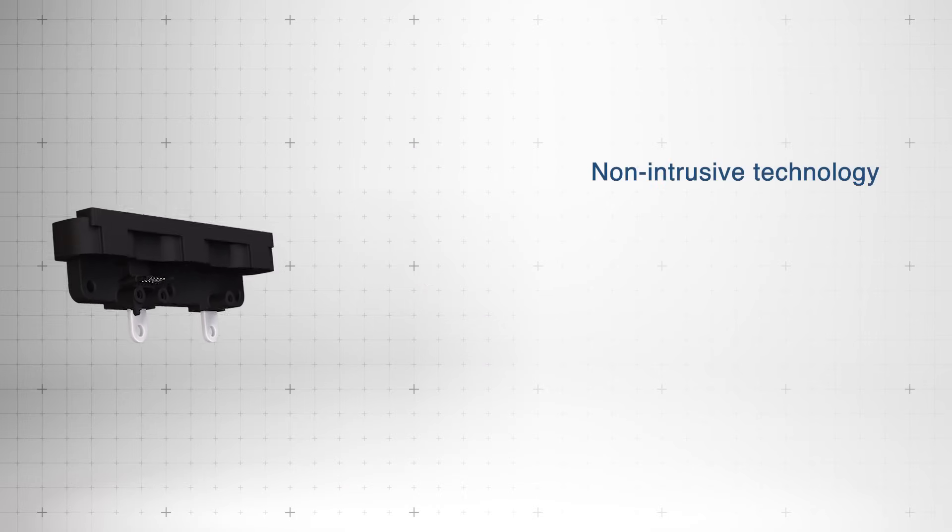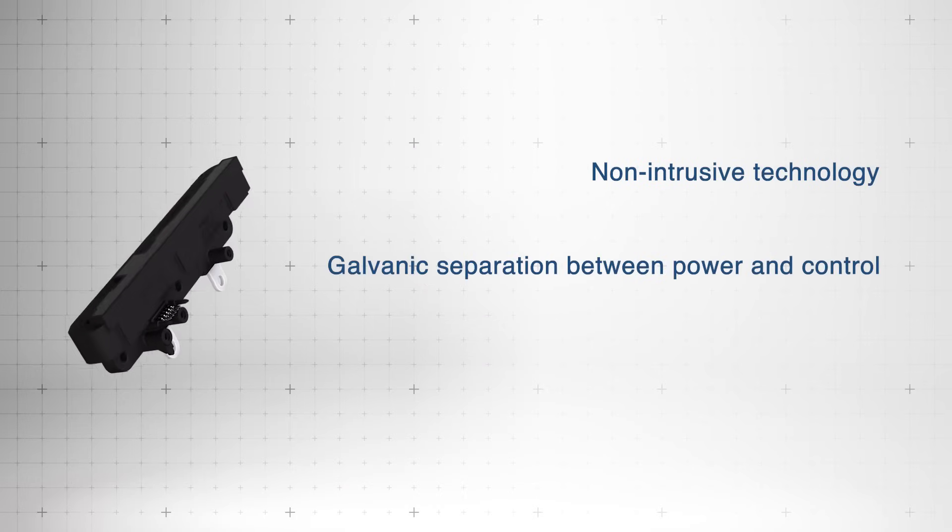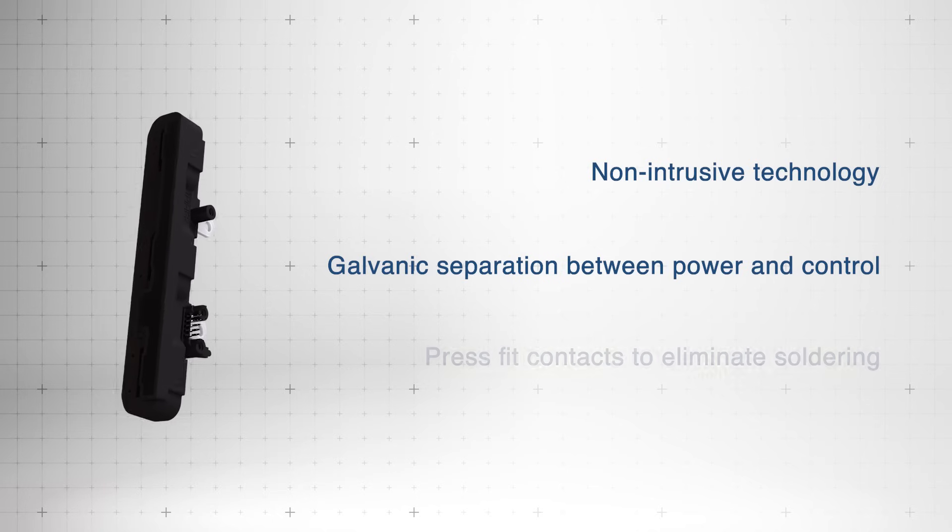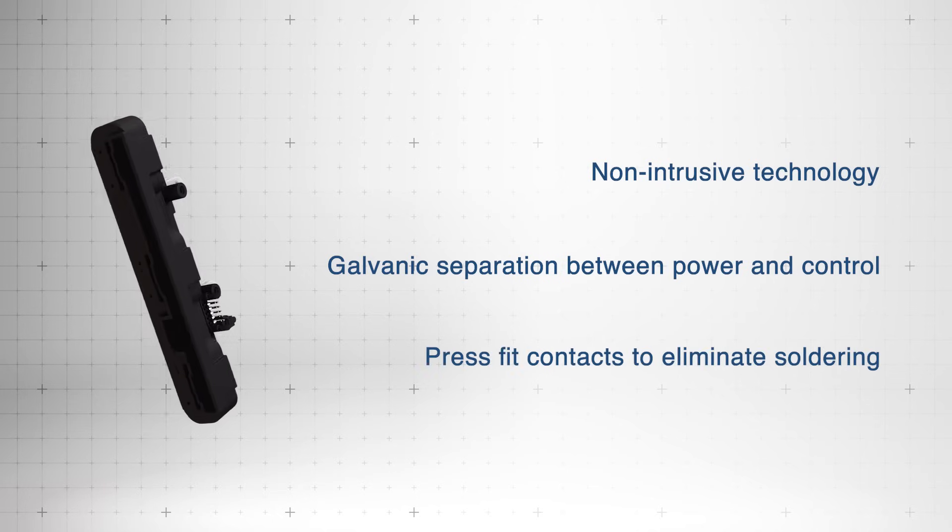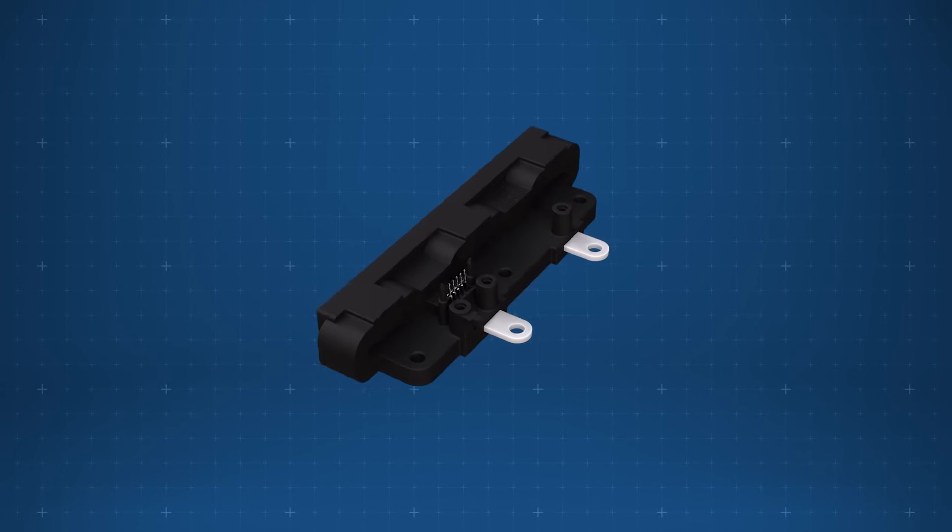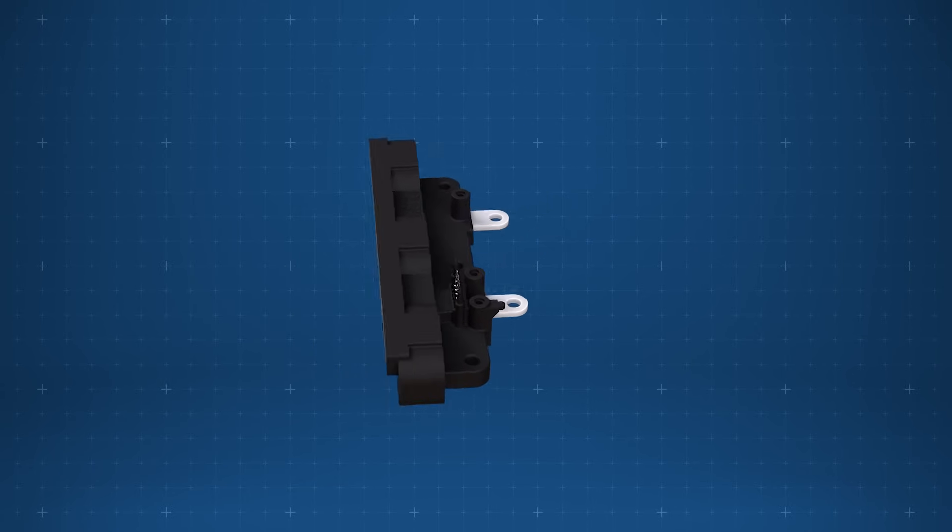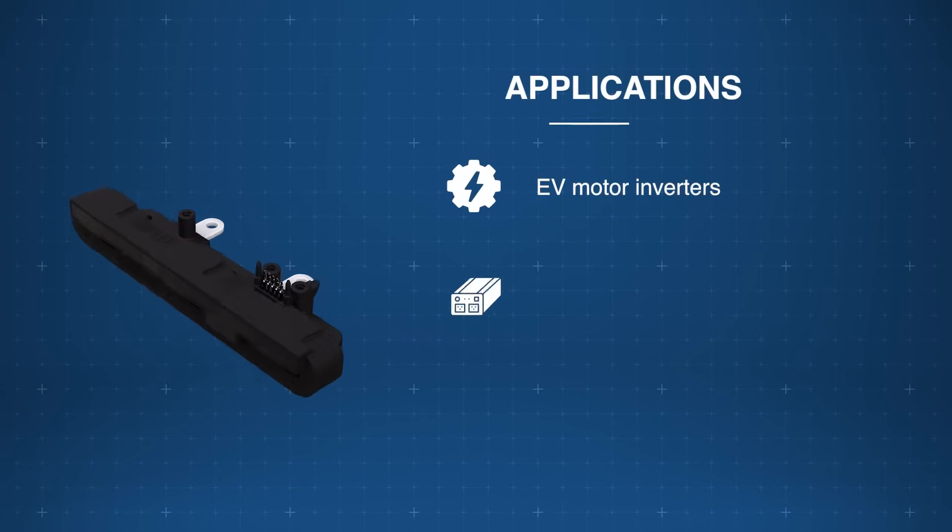Additional features include non-intrusive technology, galvanic isolation between power and control, and press-fit contacts to eliminate soldering. The Amphenol Pier HCSP3BS current sensor is ideal for EV motor inverters,